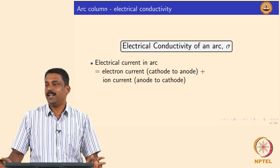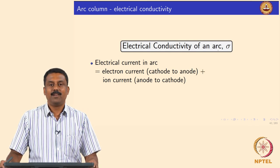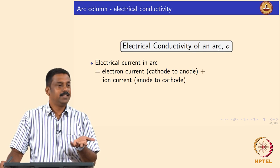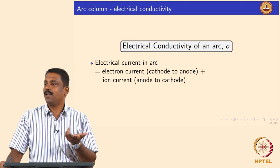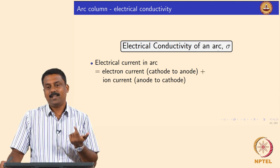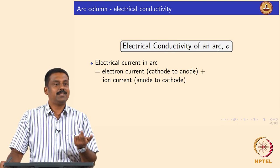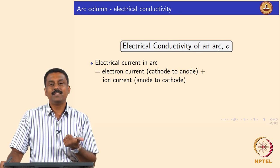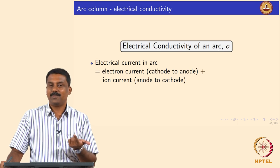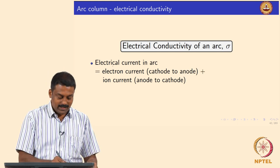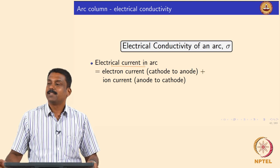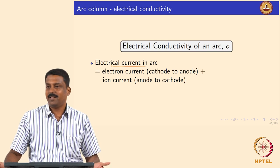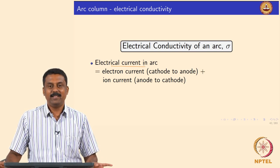Current in an arc is the transport of charge carriers. The charge carriers in an arc are electrons and ions. Electrons travel from cathode to anode; ions travel from anode to cathode. So the total electric current is simply the electron current plus the ion current.